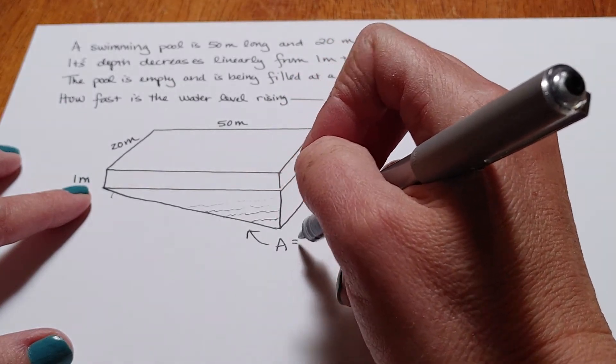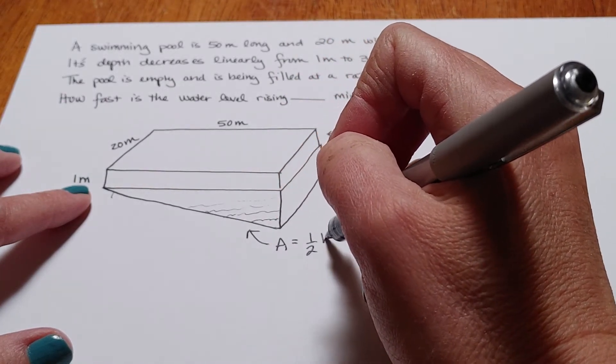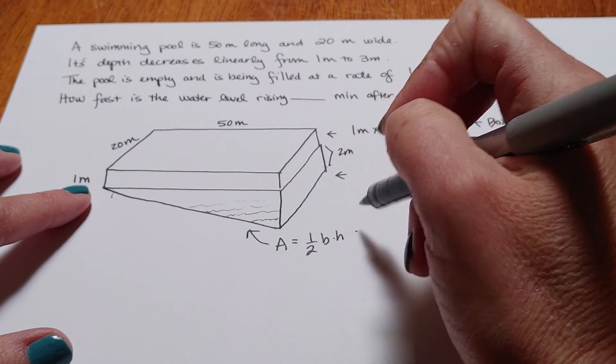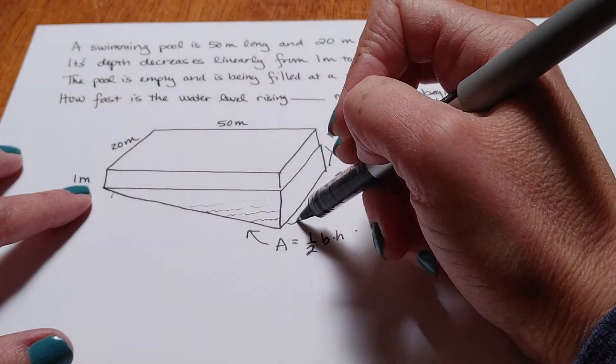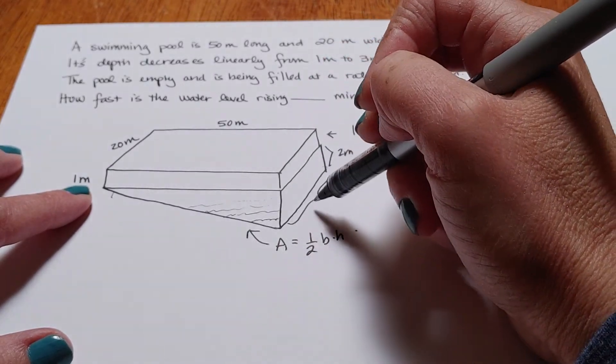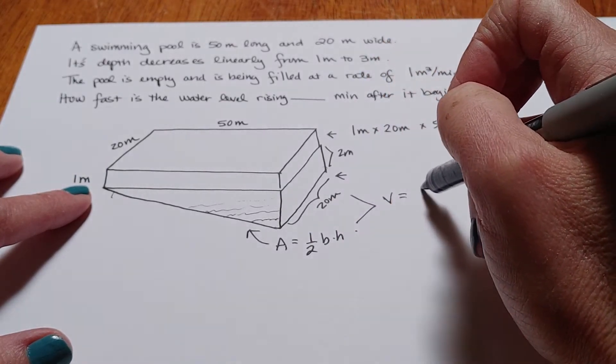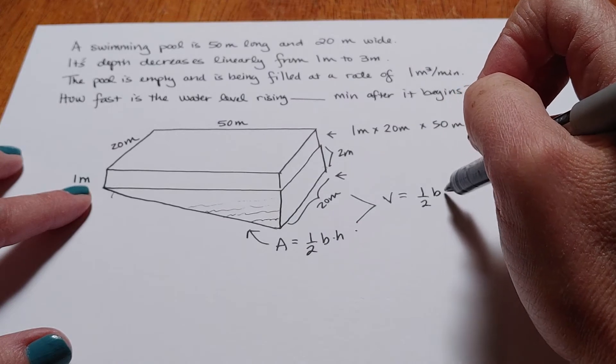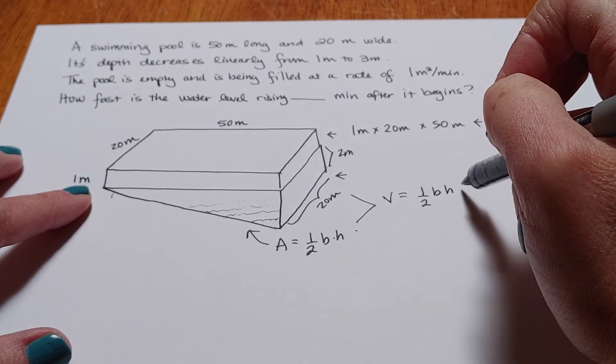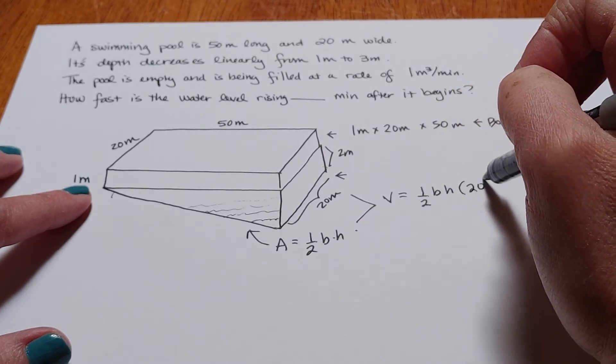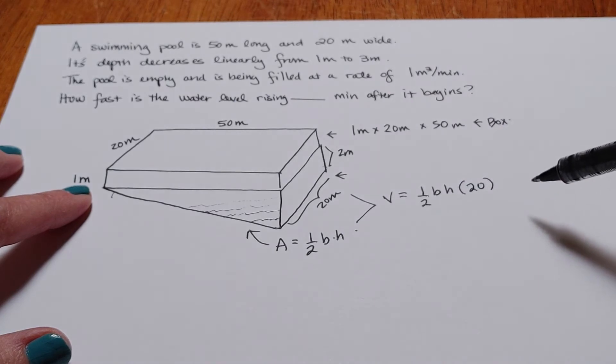So the volume of this shape would be the area of the triangle times the distance here, which is 20 meters. So the volume would be 1 half base times height times 20. So that's the volume of the bottom wedge.